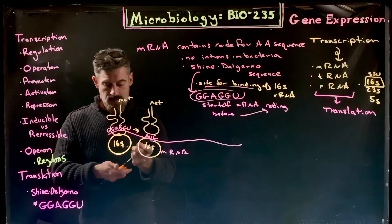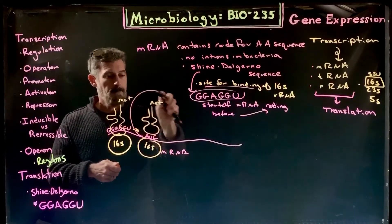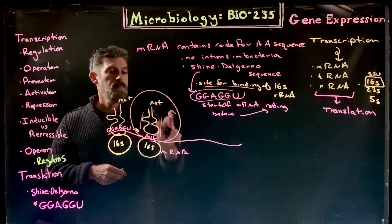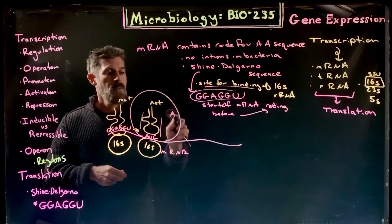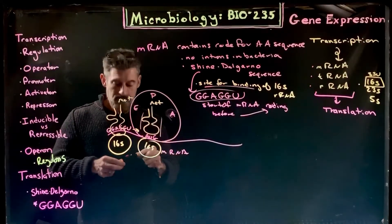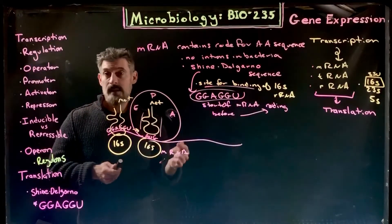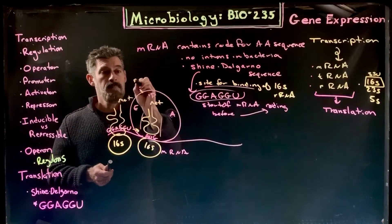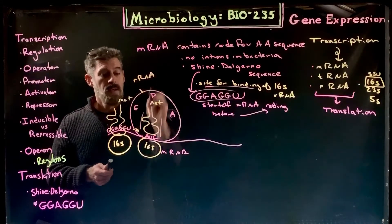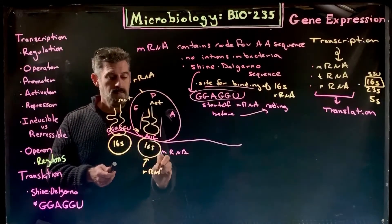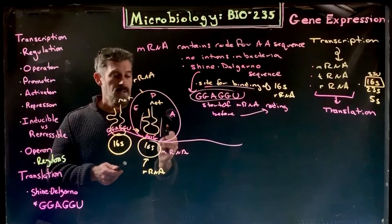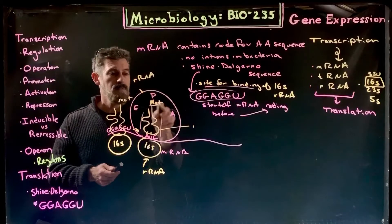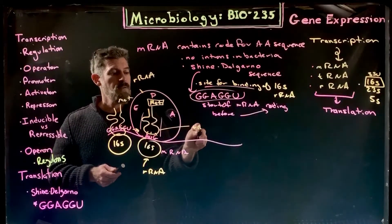At the start codon we'll get the large subunit to come in. There are binding sites within the large subunit. We have the large subunit and small subunit which are ribosomal RNA, our messenger RNA, and then this little clover-leafed guy carrying the amino acid—that's our transfer RNA.